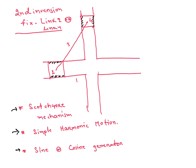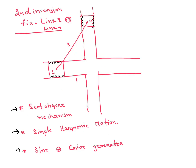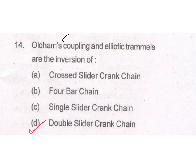For the third inversion, the fixed link is link 3 — the connecting rod — and here you will get Oldham's Coupling. So in this question, Oldham's Coupling is the third inversion of the double slider crank chain, and the Elliptical Trammel is the first inversion. Both are examples of the double slider crank chain.